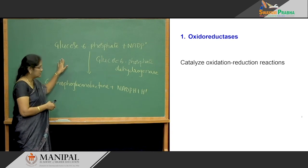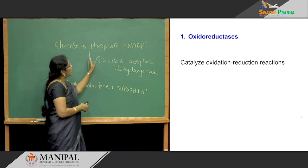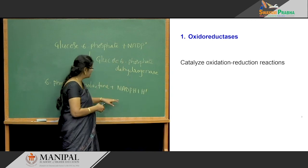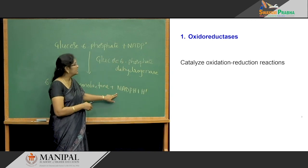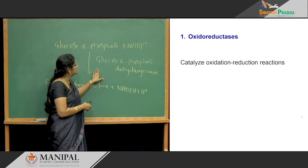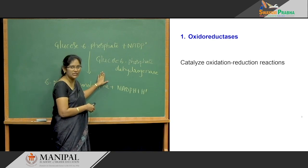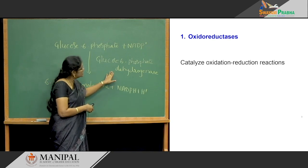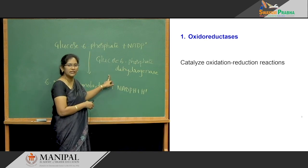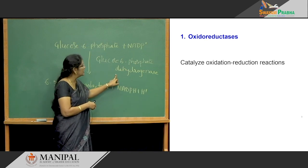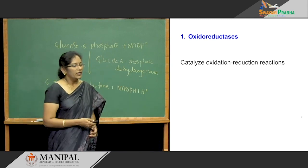Glucose-6-phosphate is oxidized to 6-phosphogluconolactone, and NADP+ is reduced to NADPH + H+. The enzyme is glucose-6-phosphate dehydrogenase. Because here both oxidation and reduction are occurring, the enzyme is named dehydrogenase.